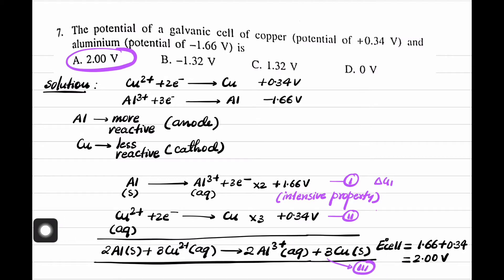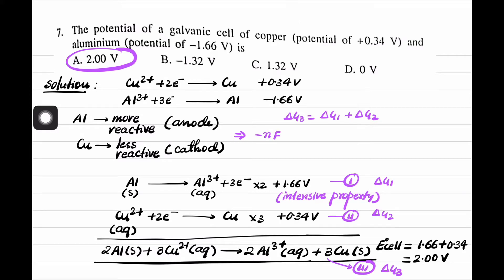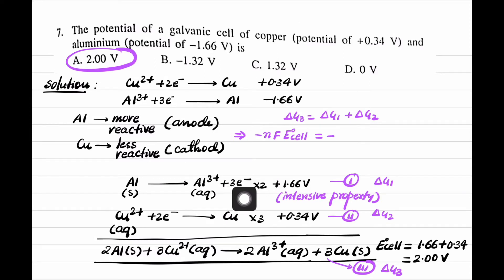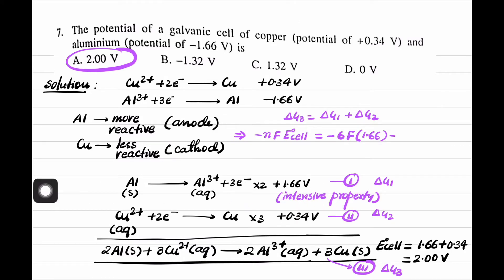We know ΔG = −nFE°cell. For the aluminium oxidation half-reaction (after multiplying by 2), n = 6 electrons, so ΔG1 = −6F(1.66). Similarly, for the copper reduction half-reaction (multiplied by 3), n = 6 again, so ΔG2 = −6F(0.34).